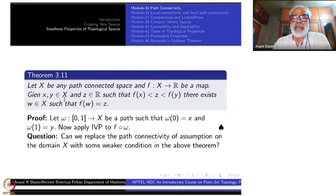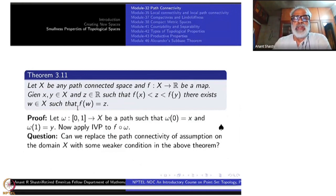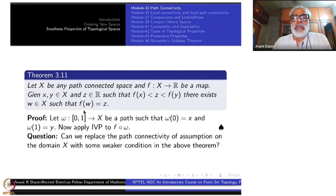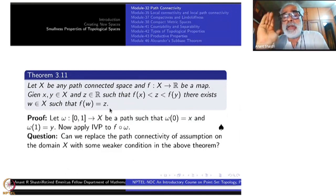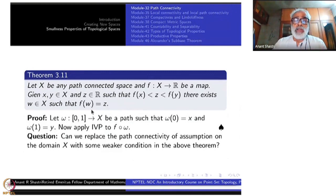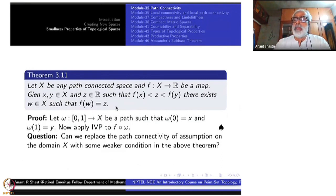Now, given x and y inside X, there is no meaning to saying x less than y. But z belonging to R — if z is between F(x) and F(y), these are elements of R — then I claim there exists a point w inside X such that F(w) equals z. This is at least part of the Intermediate Value Theorem. The intermediate value is obtained, though the point where it is attained may not be comparable with x or y since there is no ordering on X. This is quite a satisfactory generalization of the Intermediate Value Theorem.